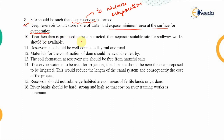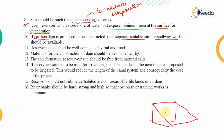If an earthen dam is proposed to be constructed - which is a dam built with locally available material, usually soil - then a separate suitable site for a spillway must be available. In a concrete dam the spillway can be provided within the body of the dam, but if the dam is made of soil we avoid placing the spillway within the dam body because the water flow would carry the soil along with it. That is why the spillway is provided separately alongside the earthen dam.